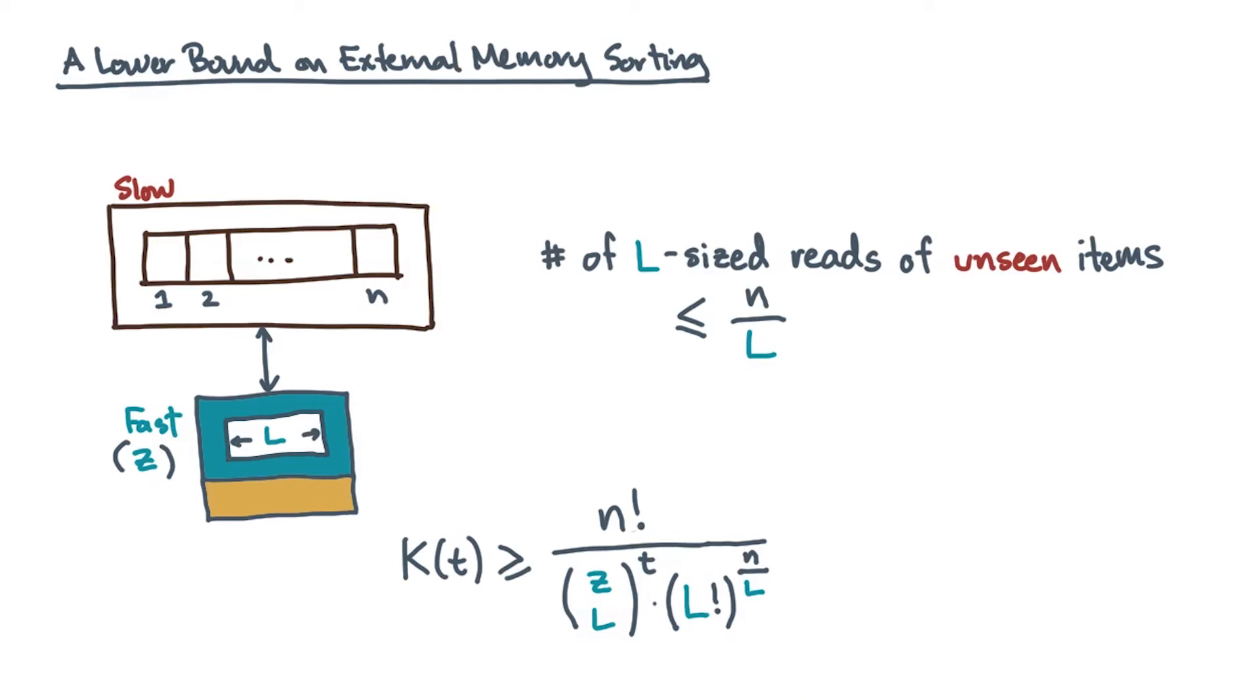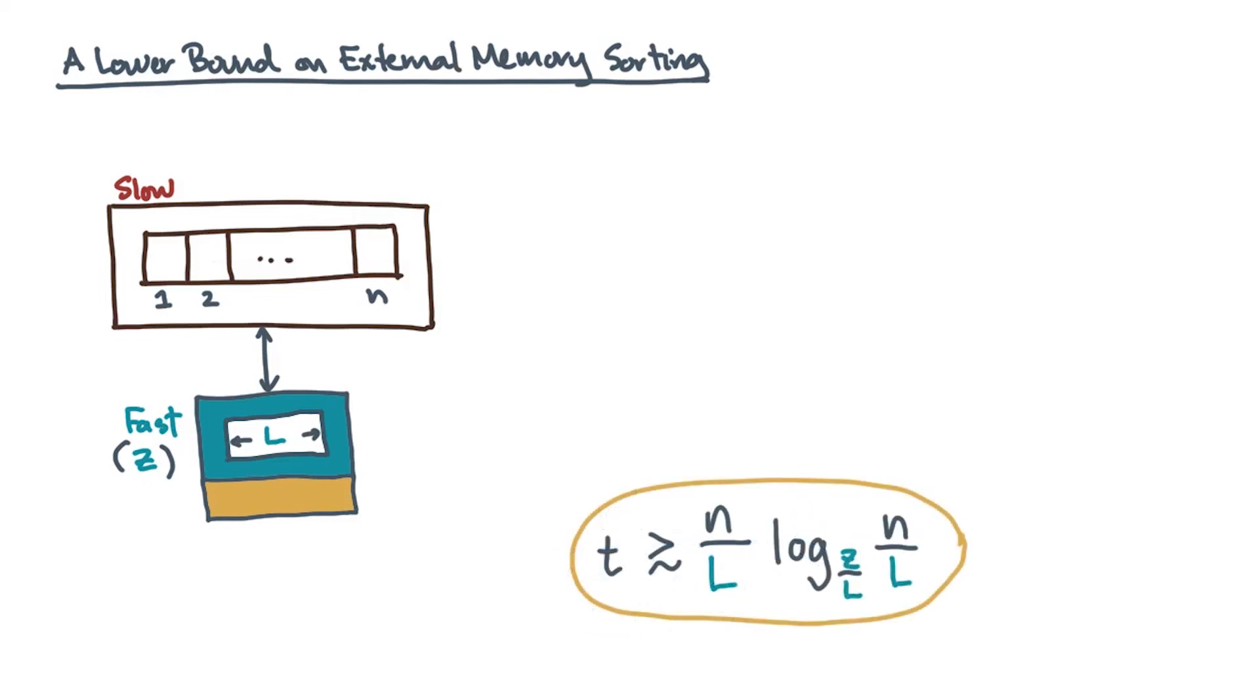What you want to know now is when does this right-hand side equal 1? That is, when does only one ordering remain? The smallest value of t such that this happens is our lower bound on the number of transfers. That turns out to be what we were after: n over l log base z over l of n over l.